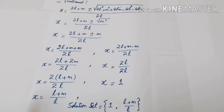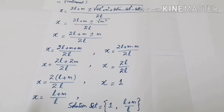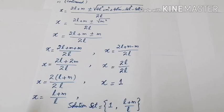Taking the plus option: x = (2l + m + m) / (2l) = (2l + 2m) / (2l) = 2(l+m) / (2l). The 2 cancels, giving x = (l+m)/l. Taking the minus option: x = (2l + m − m) / (2l) = 2l / (2l) = 1. Hence the solution set is {1, (l+m)/l}. Thank you very much.